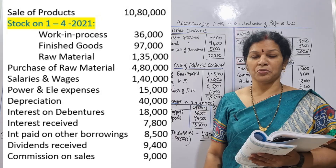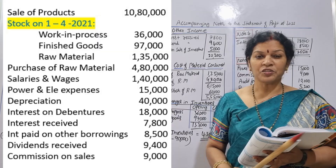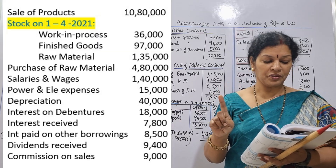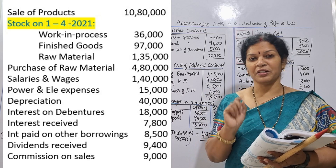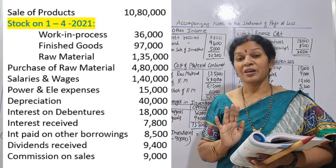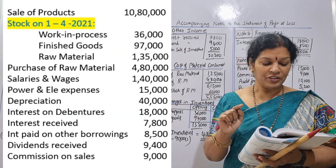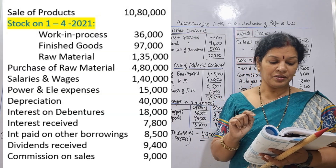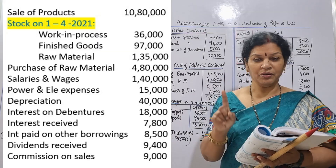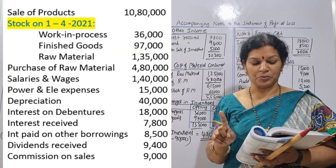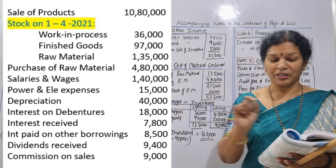After revenue from operations, we look at stock. For inventory, we have work in progress and finished goods — not raw material in the change in inventory section. Raw material goes into cost of material consumed. For change in inventory, we use work in progress and finished goods.